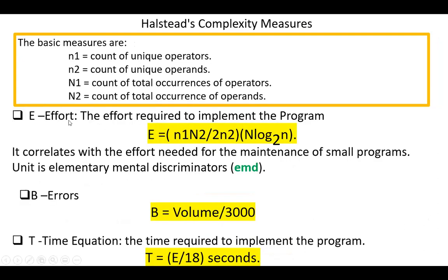Next measure is effort. It's defined as the effort required to implement the program. E equals n1*n2 over 2*n2 multiplied by capital N log to the base 2 small n. It correlates with the effort needed for the maintenance of small programs. Unit of measure is EMD, elementary mental discriminators.